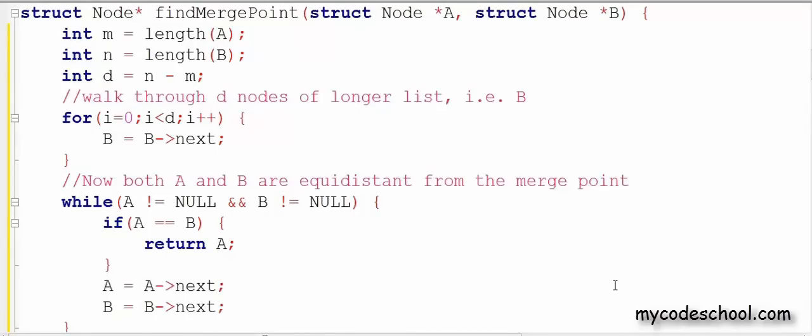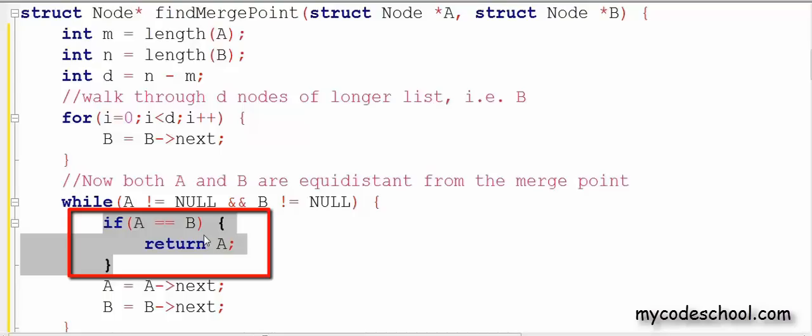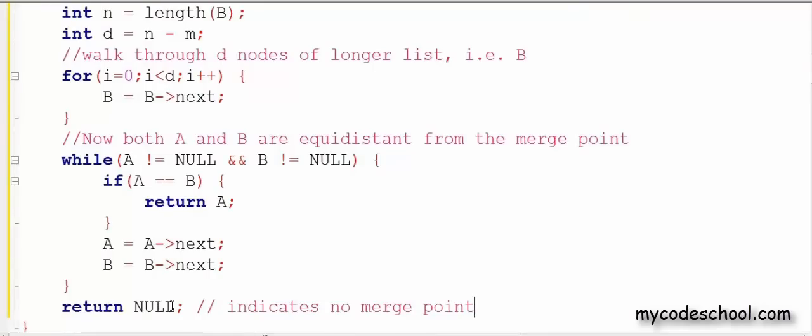However, there are two cases that we need to handle separately. I call them corner cases. Can you think of them? Okay, so the first one is, what if there is no merge point in the linked list at all? In that case, this condition would never be true. That is because both of them do not have any common nodes and hence they would never point to the same node. So eventually we will come out of this loop when they both hit null and then we could return a null to indicate that there is no merge point.